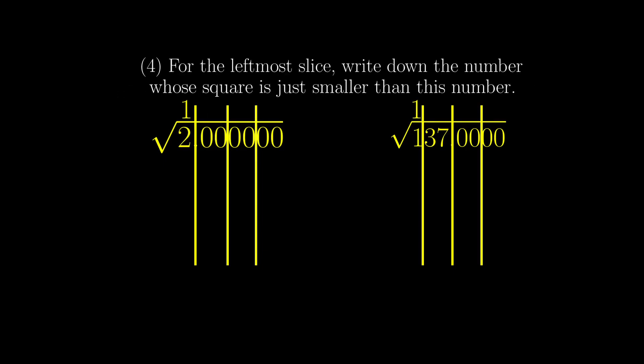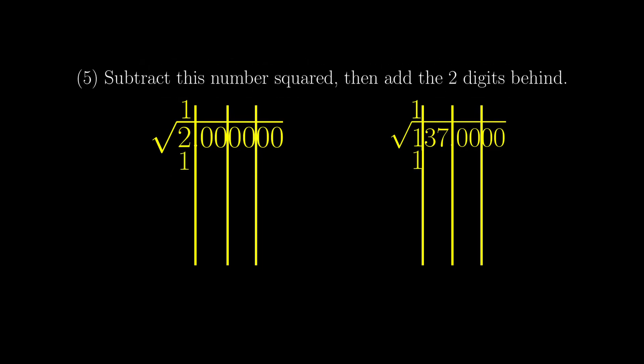For the leftmost slice, write down the number whose square is just smaller than this number. Subtract this number squared, then add the two digits behind.